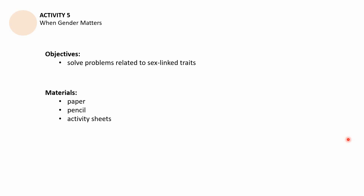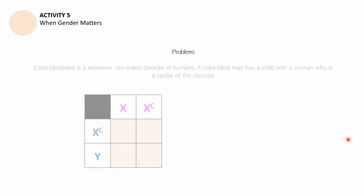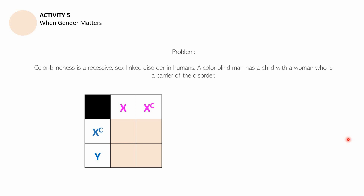Let us now move on to Activity Number 5: 'When Gender Matters.' You will need an extra sheet of clean paper or your science notebook. The objective is to solve problems related to sex-linked traits. The problem is: color blindness is a recessive X-linked disorder in humans. A color blind man (X^c Y) has a child with a woman who is a carrier of the disorder (X X^c). Consider this problem as you answer the following questions.